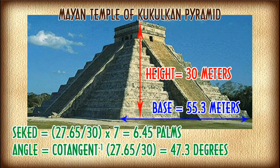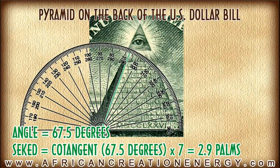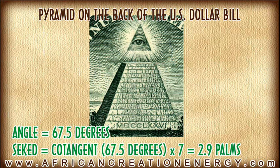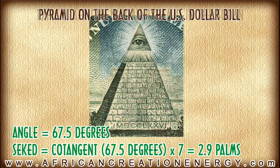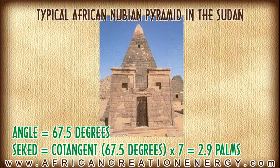Let us analyze the pyramid on the back of the U.S. dollar bill. Using a protractor, we can see that this pyramid has an angle of roughly 67.5 degrees. We can use this angle to calculate the Seqed, which comes out to roughly 2.9 palms. Of all the pyramids analyzed, the pyramid on the U.S. dollar bill is not closely related to the Giza or Mesoamerican pyramids, but rather has the angle and Seqed of a typical African Nubian pyramid from Sudan — with an angle in the 60s and a Seqed in the 2 to 4 range.